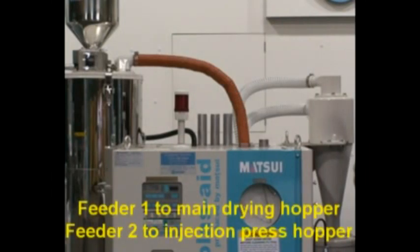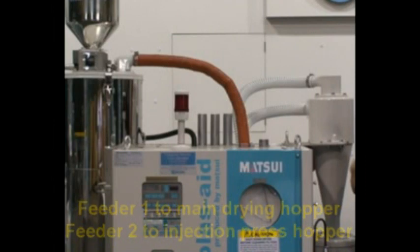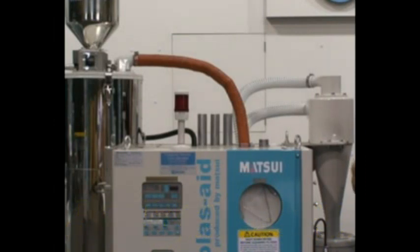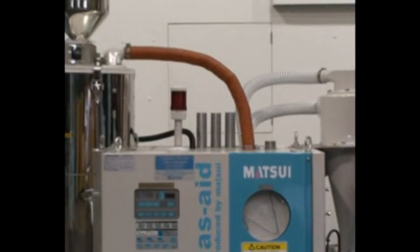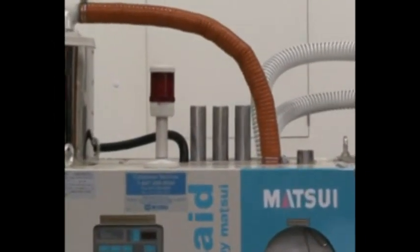Number one will feed into the dryer, and number two will feed an injection press. The MJ3 also has the capability of a third optional direction to load another injection press. The easiest way to identify this is to observe how many vacuum ports are located at the top rear of the unit.